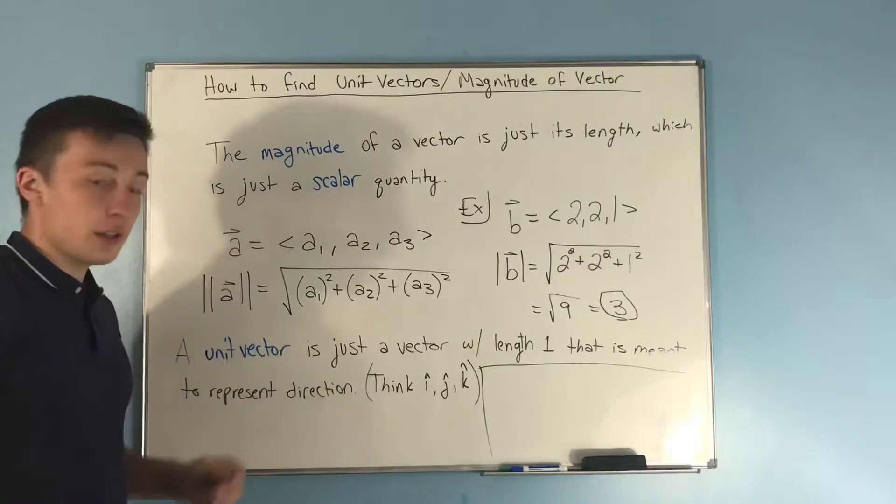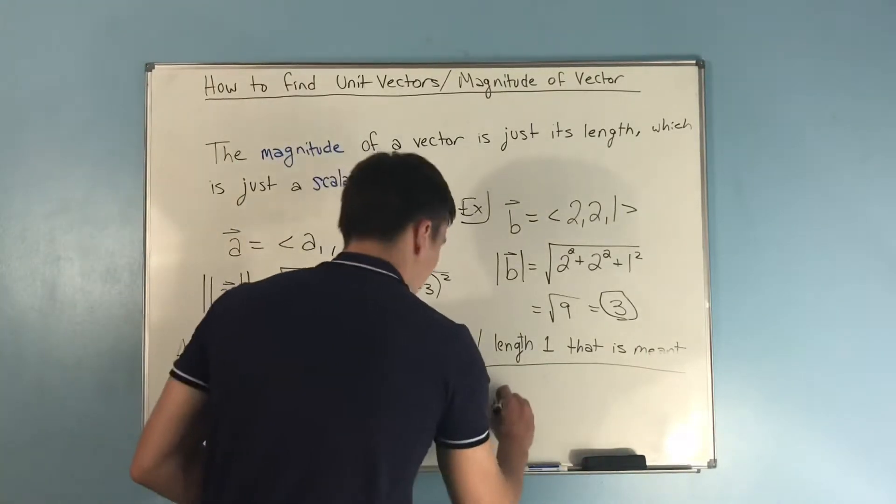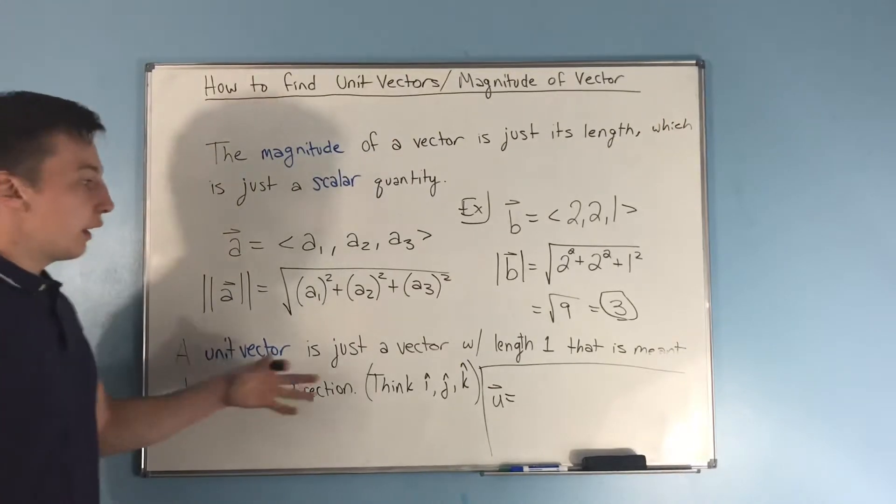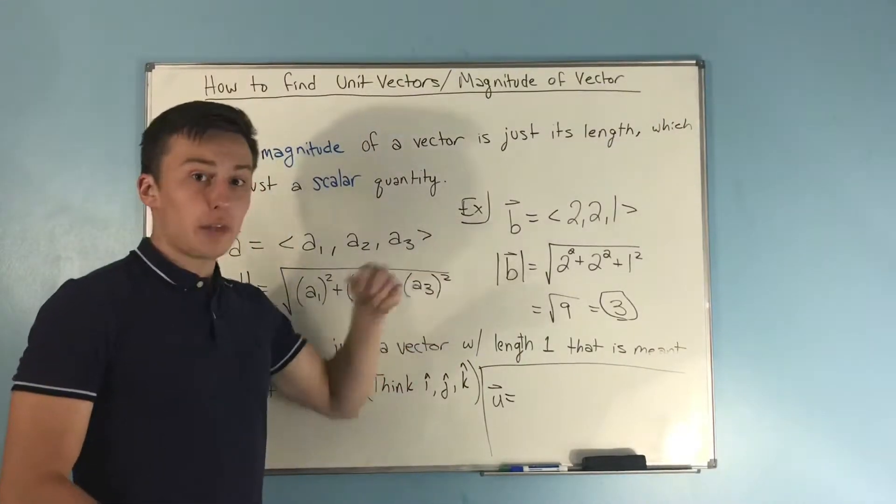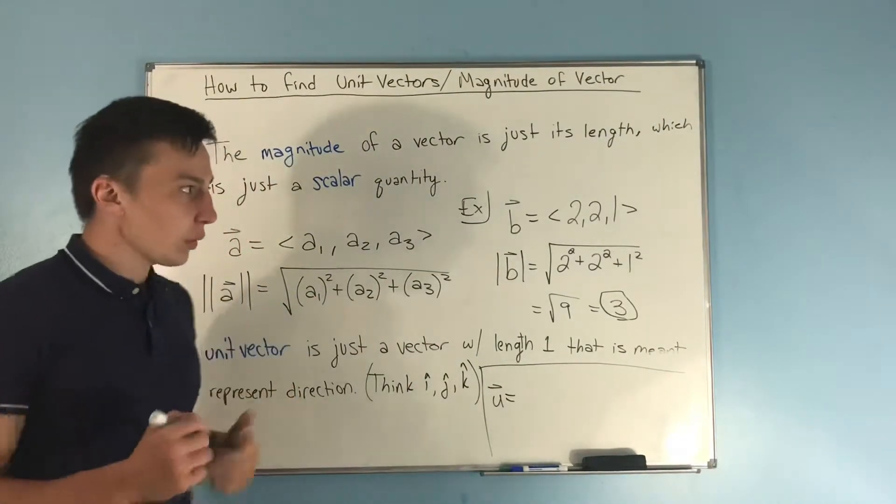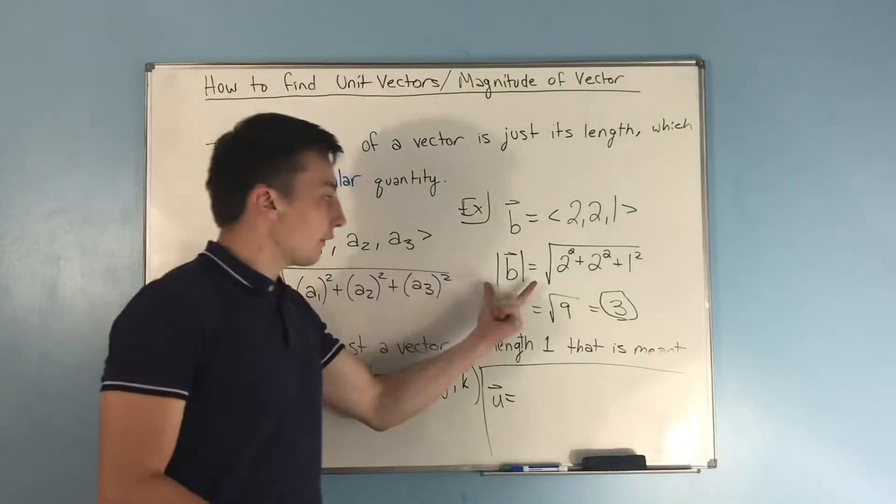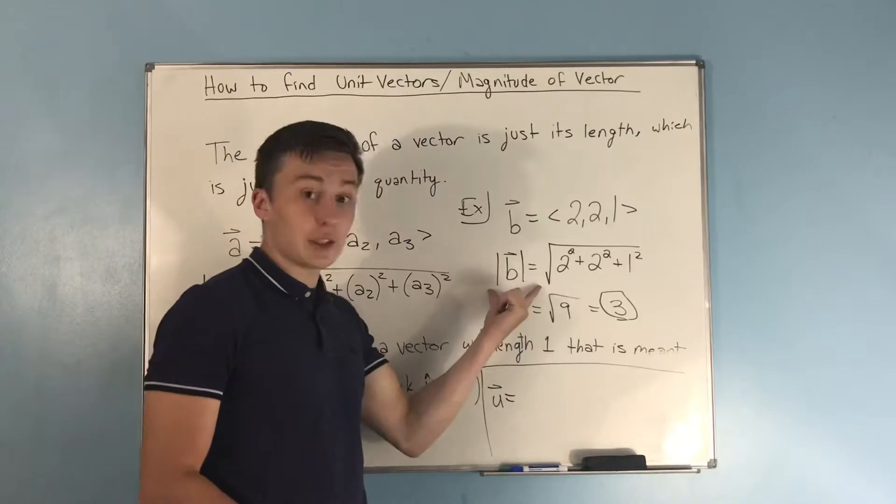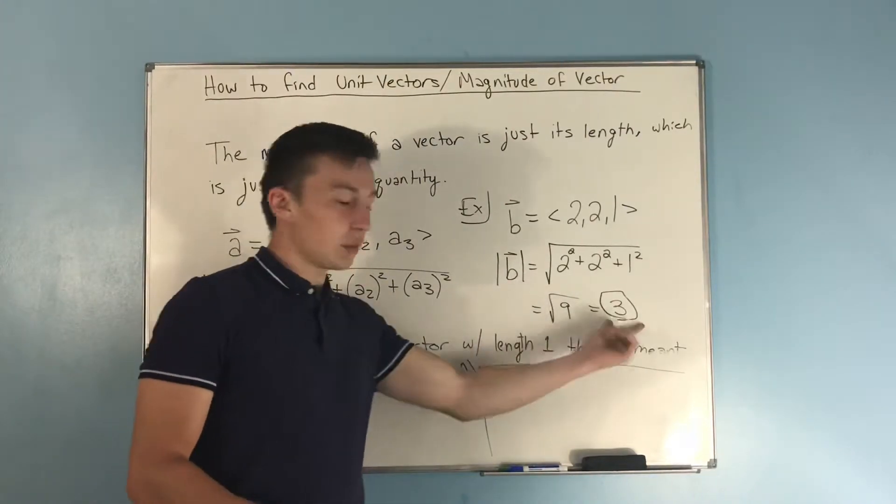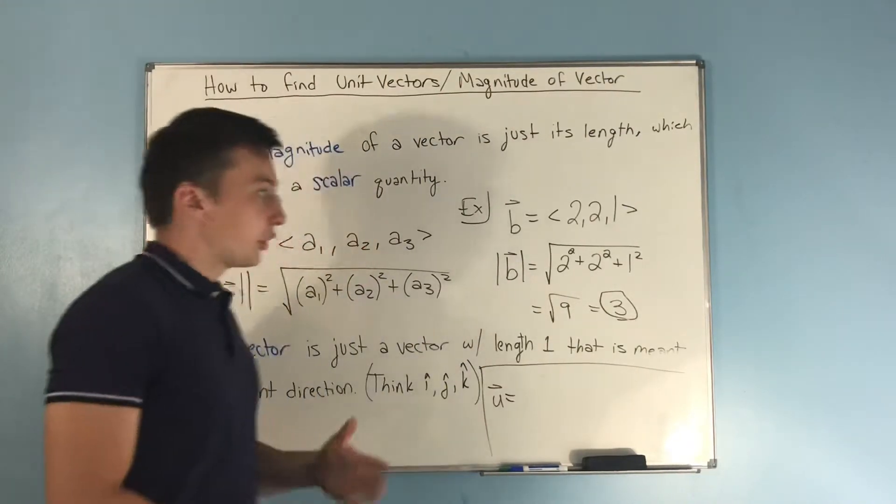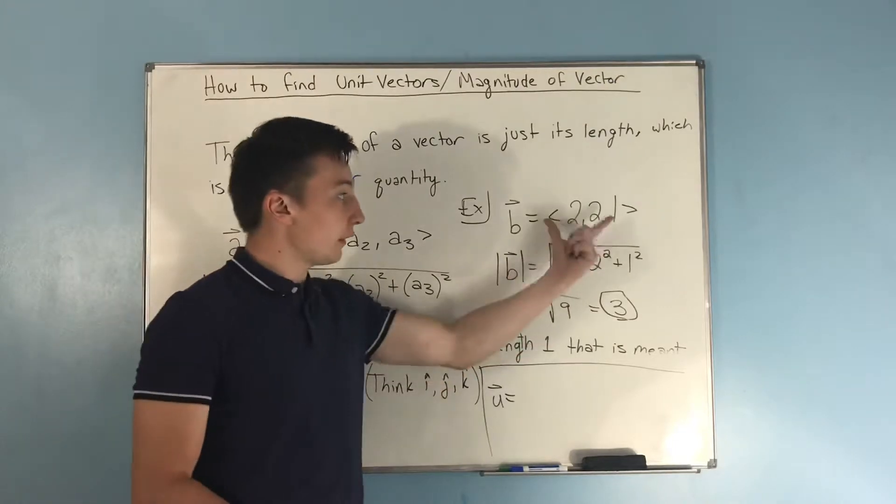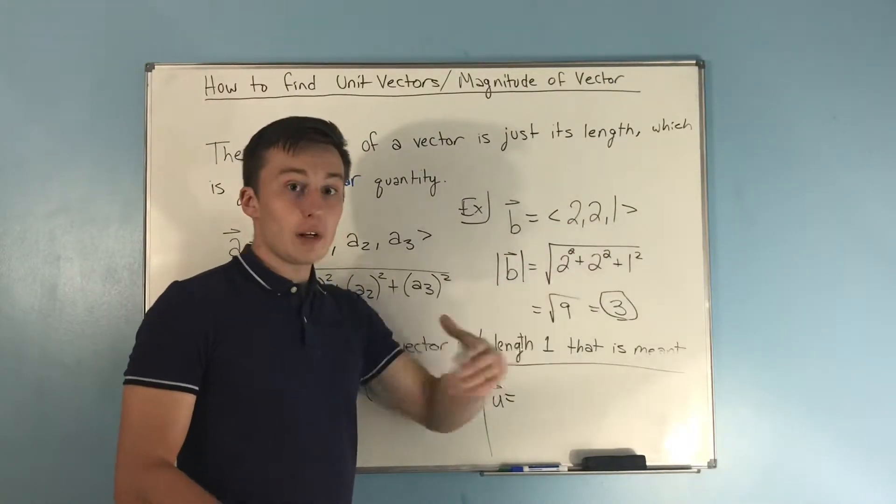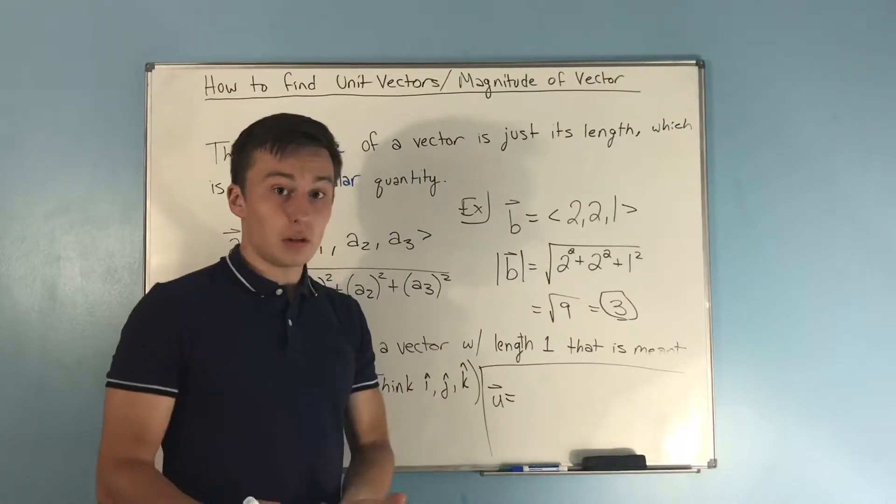Now how do you find the unit vector? Well you can kind of think about this logically. You're just finding this vector but now with length 1. Well here's something. You know that the length of this vector, which is the magnitude, right? The length of the vector is 3. So if the length of the vector is 3, if you divide it by 3, you end up with a vector that has the length 1.